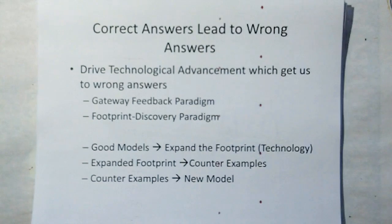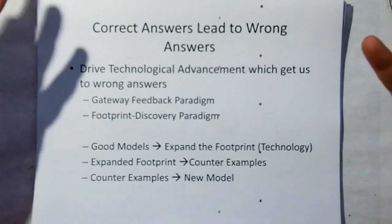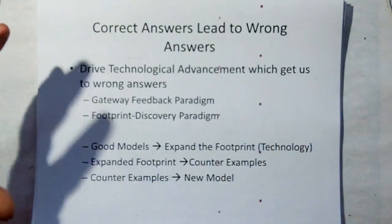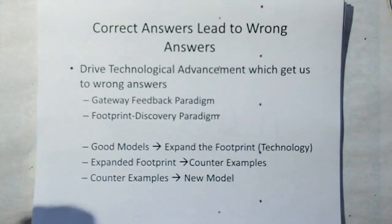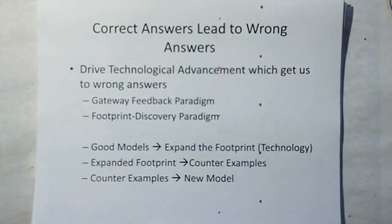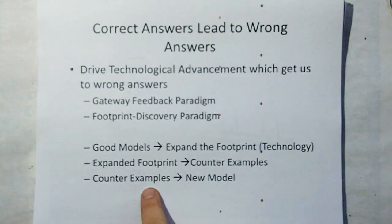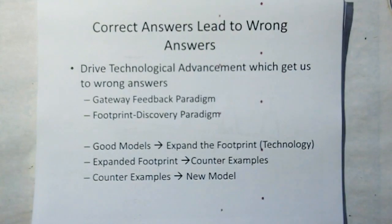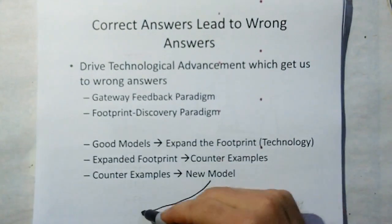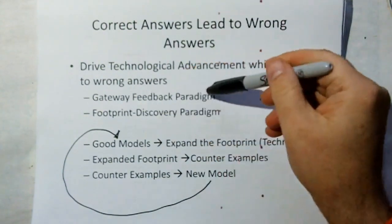Essentially, you have good models — they don't necessarily have to be irrefutable, just good models. Those good models allow you to expand your footprint in the universe. Our footprint is our technology: how sensitive we can measure, how far we can see with our telescopes, how fast we can travel, how deep below the sea — our total capability and knowledge. When you expand that footprint, you're going to stub your toe on a counterexample. And that counterexample is the mother of scientific progress. The feedback part is that the new model then replaces the previous model, and this whole cycle starts again.